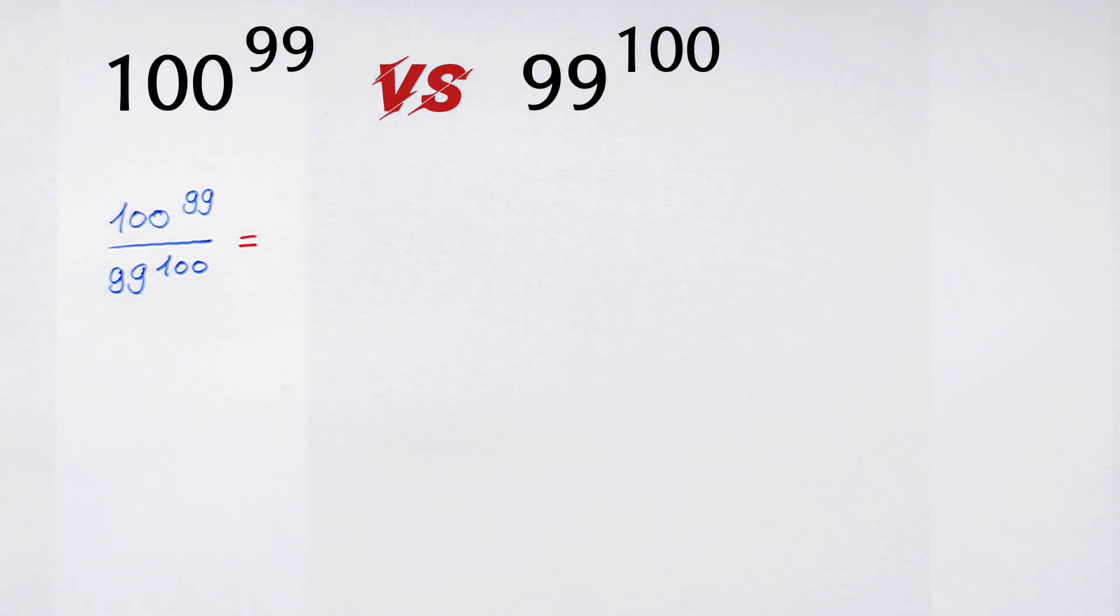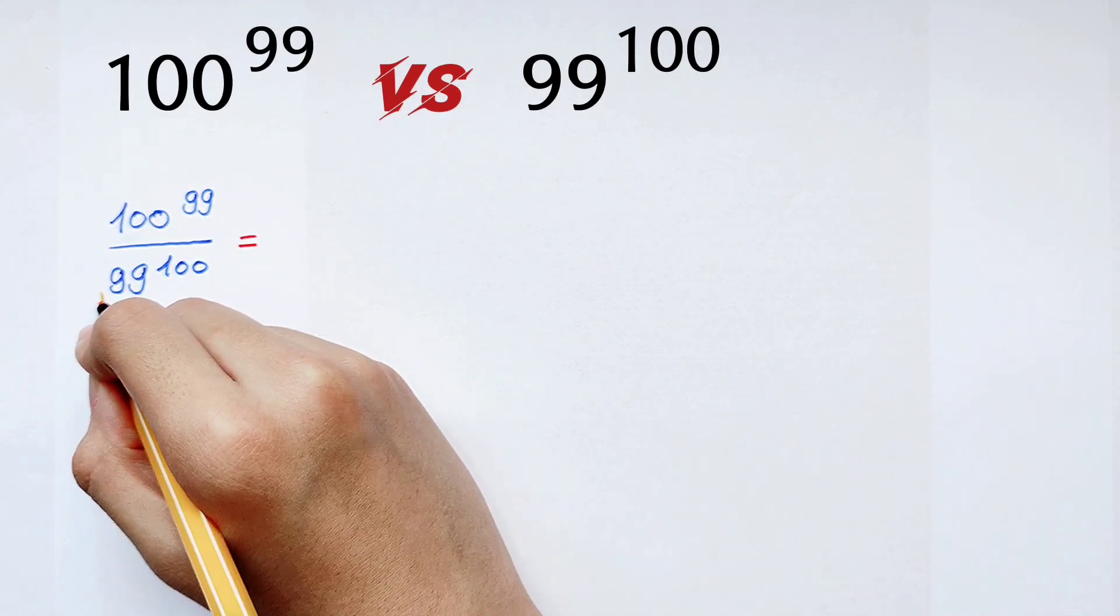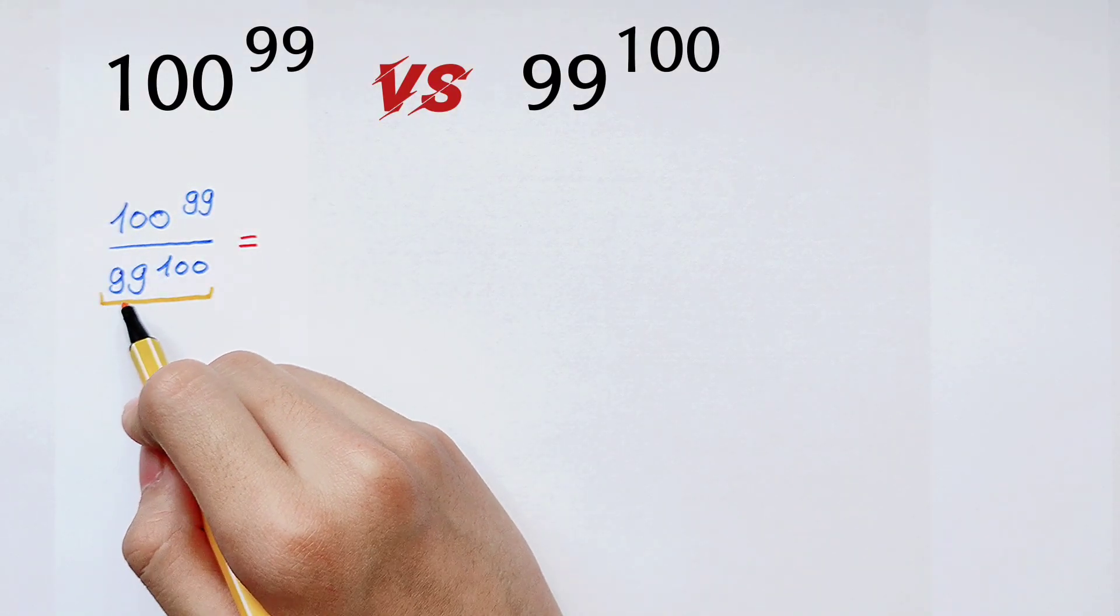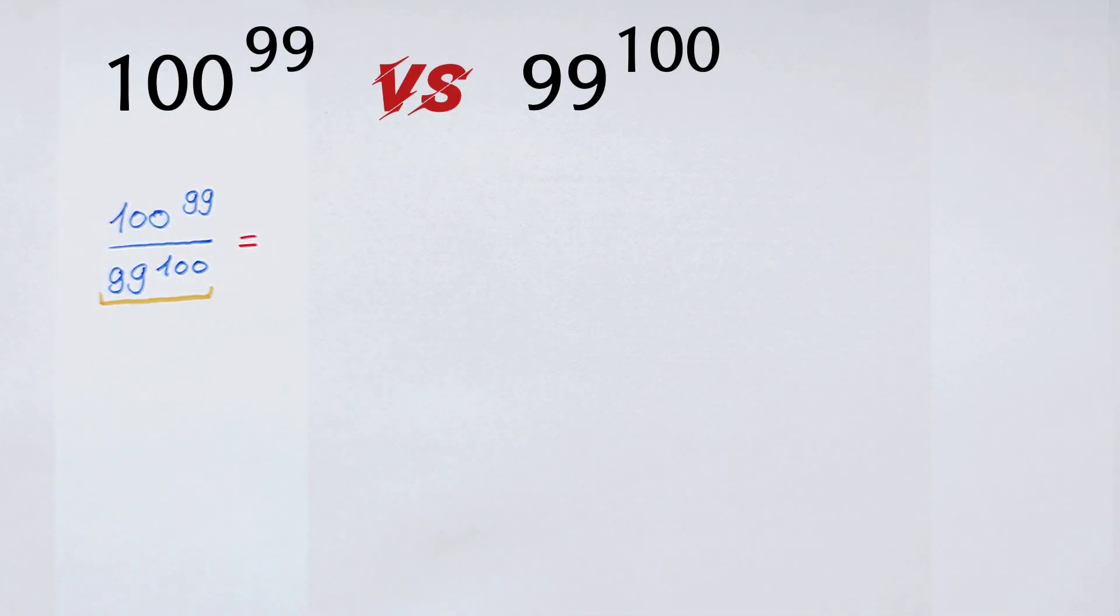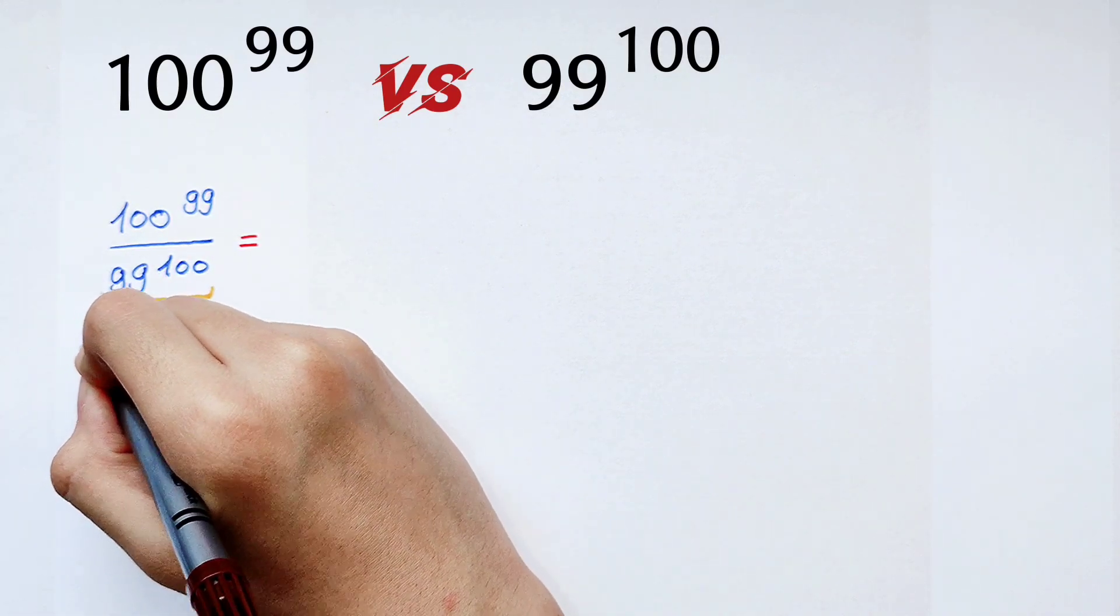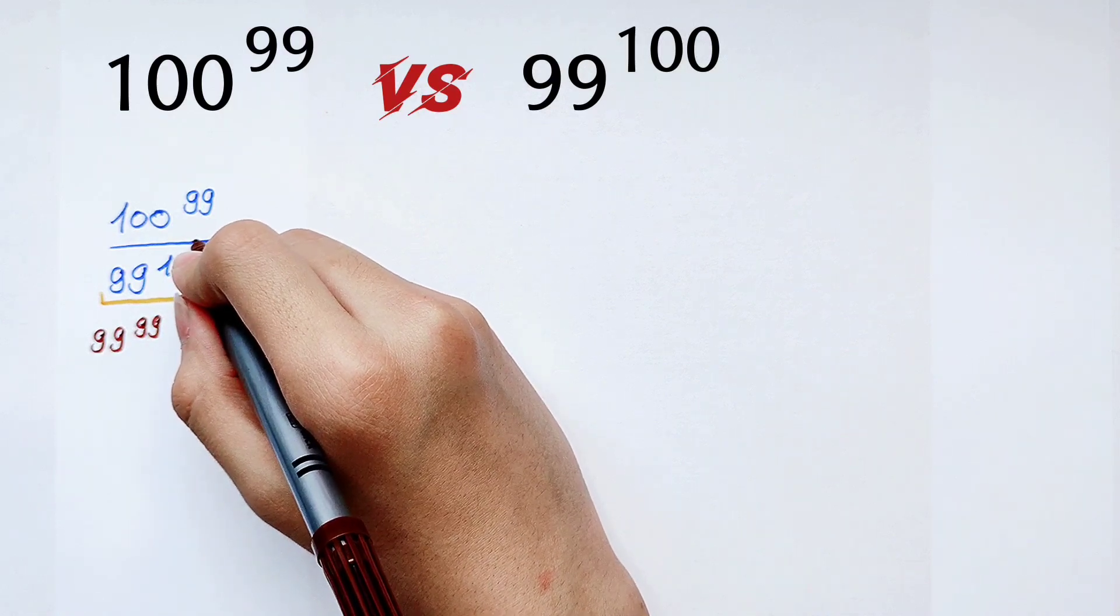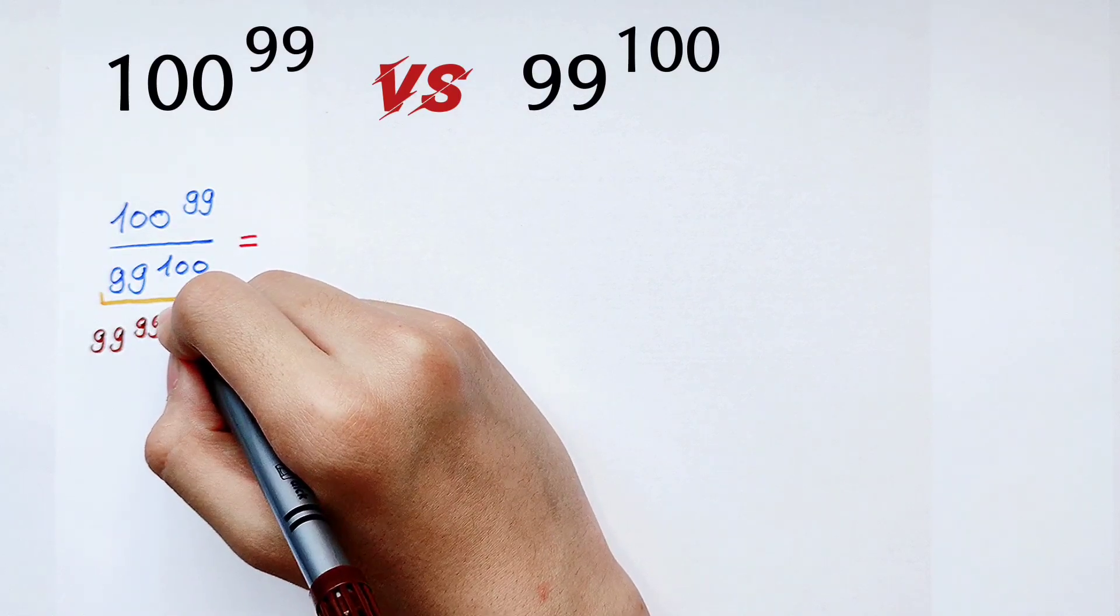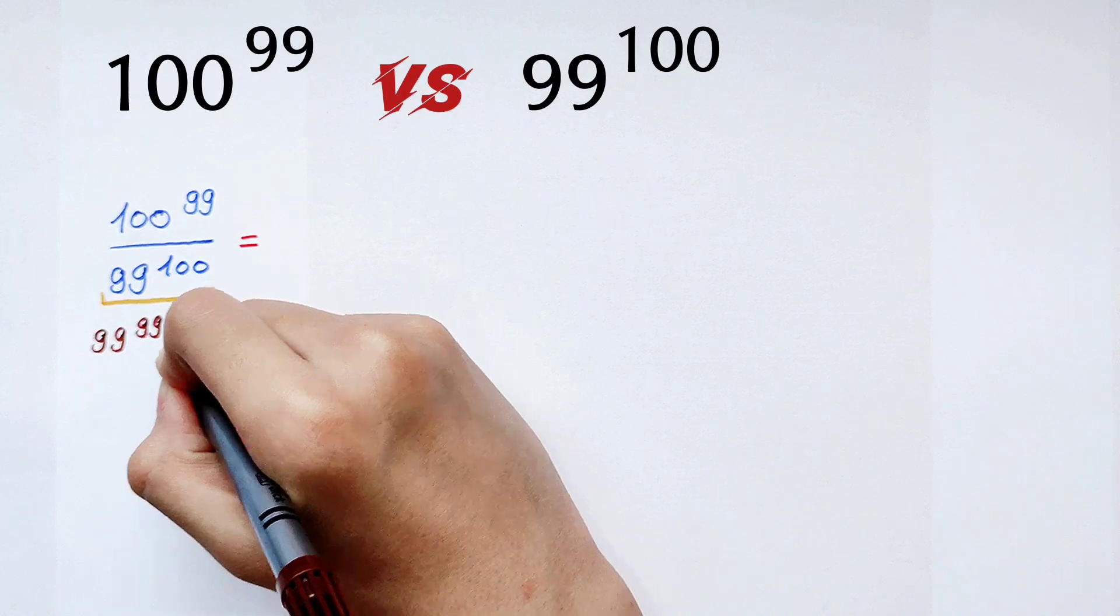Now I have to pay attention to the denominator, which is 99^100. We've noticed that the bases and exponents are different. So I can write 99^100 as 99^99, because the exponent is 99, and let it spare a 99. So 99^100 can be written as 99^99 times 99, very good.